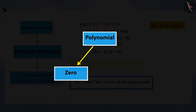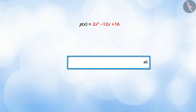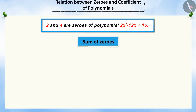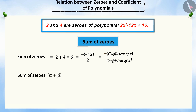Do you know that the zeros of a polynomial and its coefficients are related to each other? Let's see how. If we add the zeros, you will see that the sum of the zeros is equal to the negative ratio of the coefficient of X to the coefficient of X squared of the quadratic polynomial.